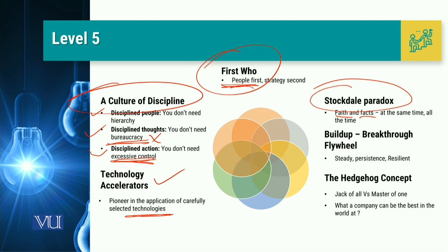In the Level 5 concern of building a breakthrough flywheel, the leader has to be steady, persistent, and resilient. Without these three characteristics, the leader would not be able to achieve the required outcomes.